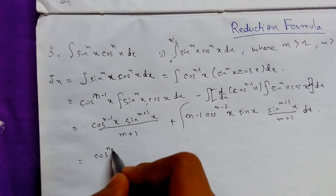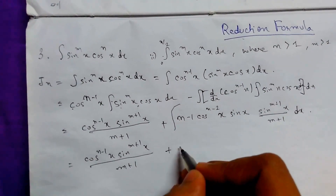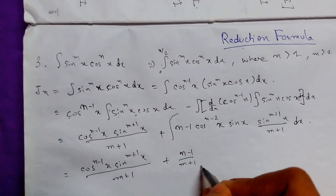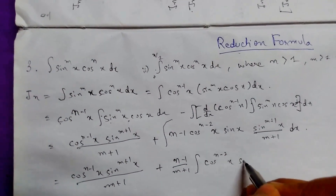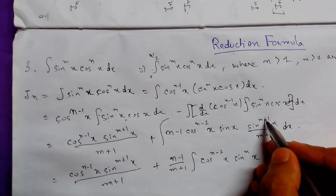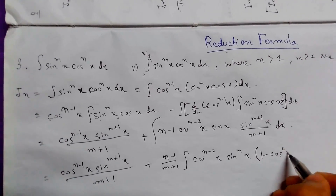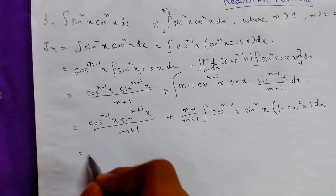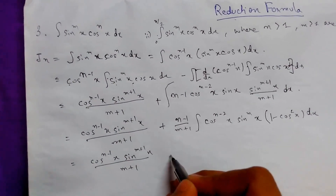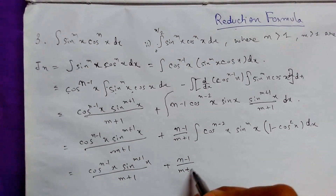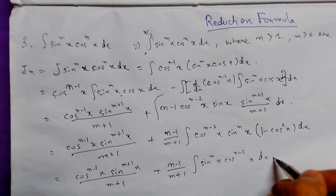Now we will write this out again. This comes out as cos^(n-2)(x) · sin^m(x). Then sin^2(x) arises, and sin²(x) equals 1 minus cos²(x) dx. So we get cos^(n-1)(x) · sin^(m+1)(x) upon m+1. Now we are just opening and expanding the brackets.